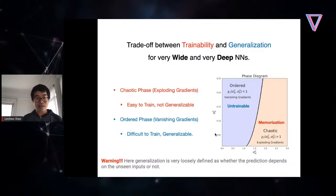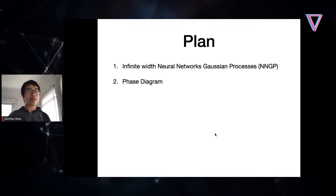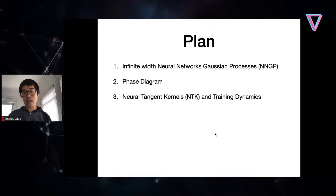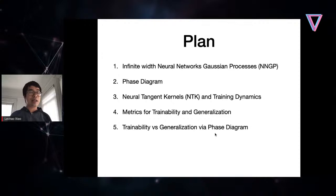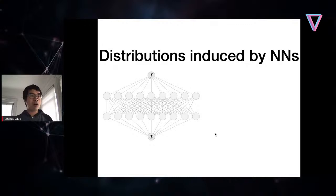In this phase diagram there are two phases. In the chaotic phase, when weight variance is relatively large, we have exploding gradients and the network memorizes data. In the ordered phase, when bias variance is relatively small, we have vanishing gradients and training is difficult, but if training succeeds the network performs well. Throughout this talk, generalization is defined loosely as whether the prediction function depends on unseen inputs.